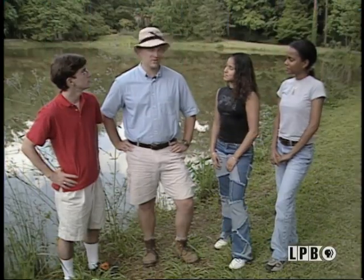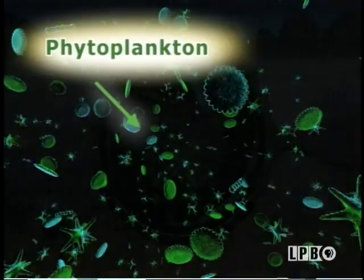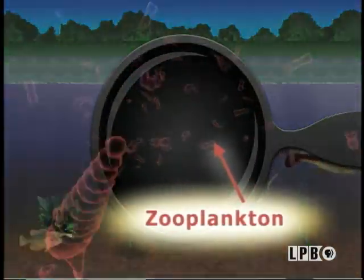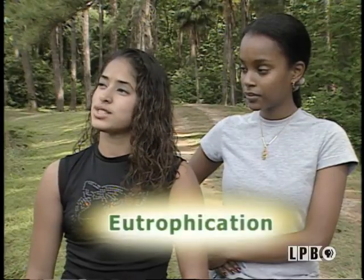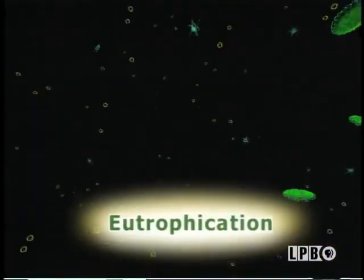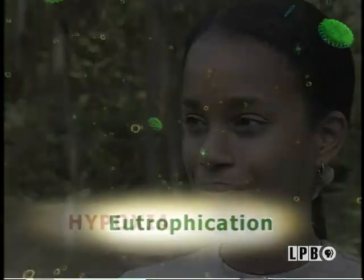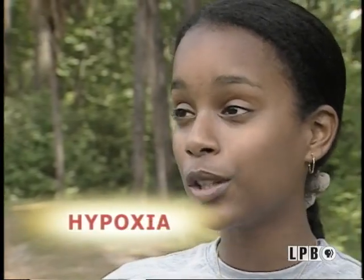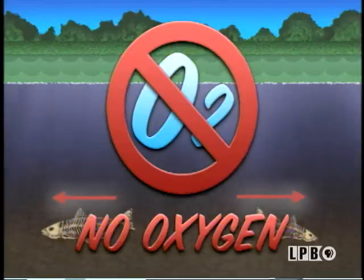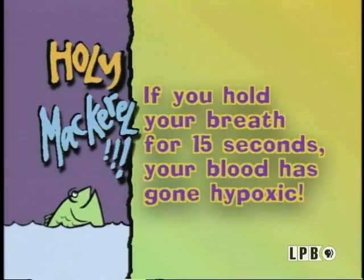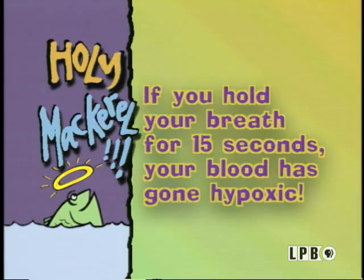So what are some of the terms you've learned? Phytoplankton — microscopic plants that float in the water. Zooplankton — tiny microscopic animal-like organisms. Eutrophication is the process where the water becomes nutrient-rich, helping microscopic plants to grow. Hypoxia means there are low levels of oxygen in the water, and anoxia means there's no oxygen in the water. If you hold your breath for 15 seconds, by medical definition, your blood has gone hypoxic. Holy mackerel!